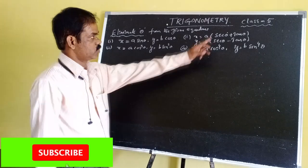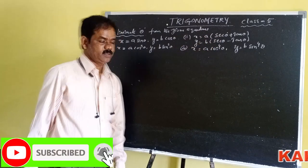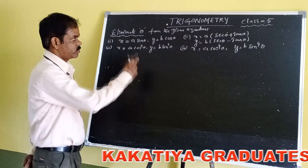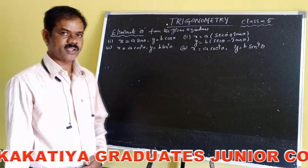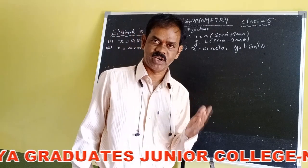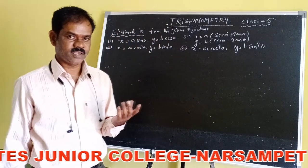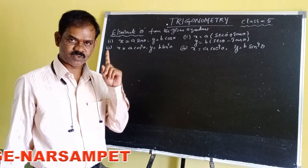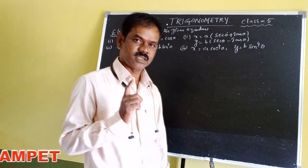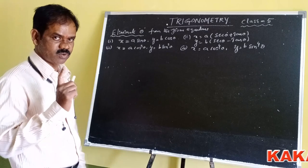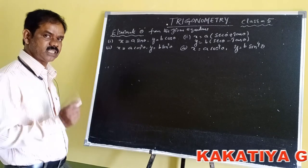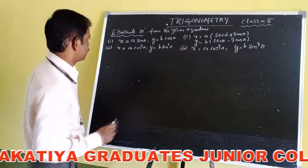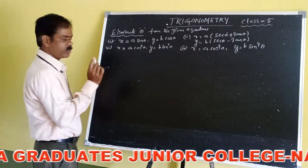Good morning students! Today we are classifying on trigonometric identities. We have discussed about eliminating theta from given equations. In the previous class, we already learned 3 identities. The first one is sin²θ + cos²θ = 1, the second is sec²θ - tan²θ = 1, and the third identity is cosec²θ - cot²θ = 1. Using these 3 identities, we have to eliminate theta from the given equations.